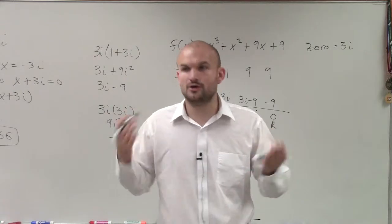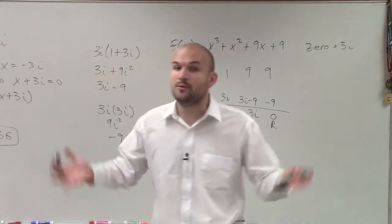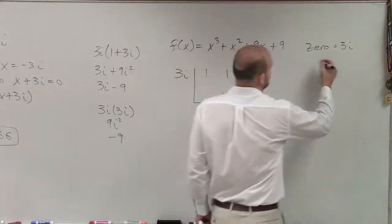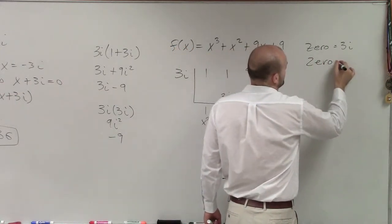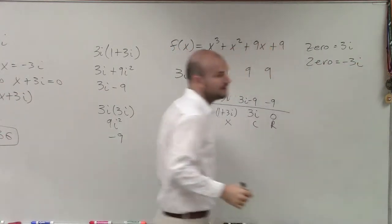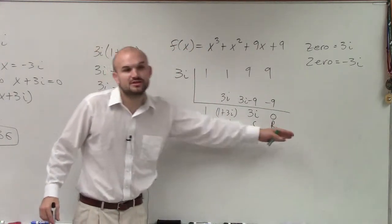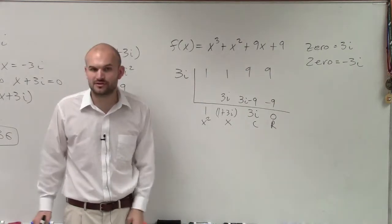If I know 3i is a zero, then I know that what else has to be a zero? Negative 3i. Yeah, it's negative 3i. So guess what? If I know that this is a zero, then what I'm going to do is divide by using this quotient one more time with my other zero.